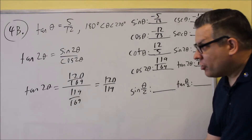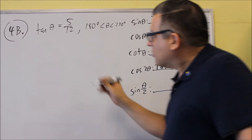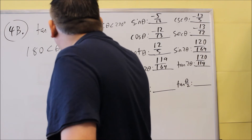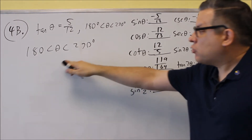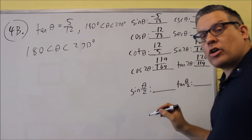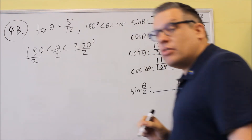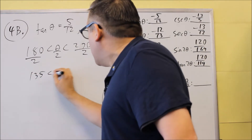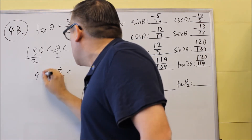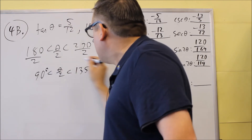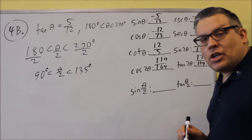The last two are the half angle formulas. For half angles, you have to first determine which quadrant θ/2 is in. The original statement gives us 180 to 270. We take that and divide each part by 2, which gives us 90 to 135 for θ/2. So θ/2 is between 90 and 135, which means it's in the second quadrant.